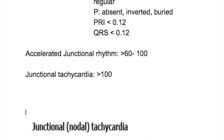A junctional rhythm has a rate of 40 to 60 beats a minute and the rate is regular. The P wave in a junctional rhythm is either absent, inverted, or buried in the QRS. The PR interval is less than 0.12 seconds and QRS is less than 0.12 seconds.